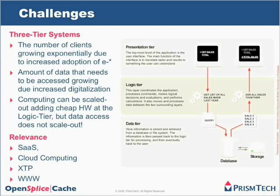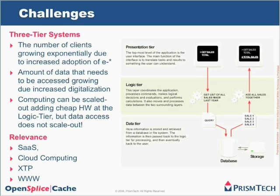Let's start with a system that is quite popular and typical in IT: the three-tier architecture. One of the trends being experienced by this system is that the number of clients it has to deal with is growing, typically exponentially, due to the increased adoption of e-services typically available through the web. This increase in customers leads to an increase of traffic to your three-tier system, which leads to increasing pressure on your database.